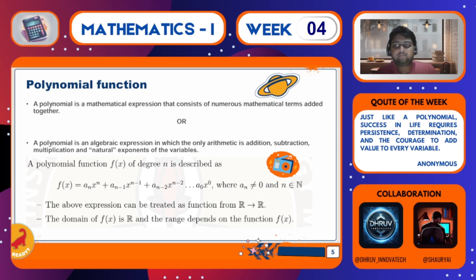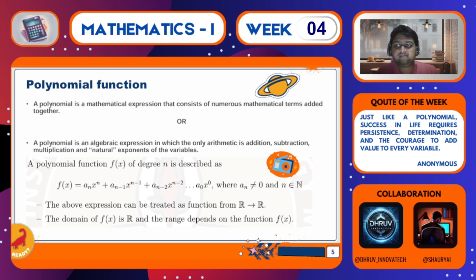First, what's a polynomial function? There are two possible definitions, both are the same, just a little different. We will be going with the second one. A polynomial is an algebraic expression in which only arithmetic operations are addition, subtraction, multiplication, and natural exponents of variables. These are expressions combined of different exponential forms of a single variable, like x³ + x² + 1. It's a cubic equation like that.